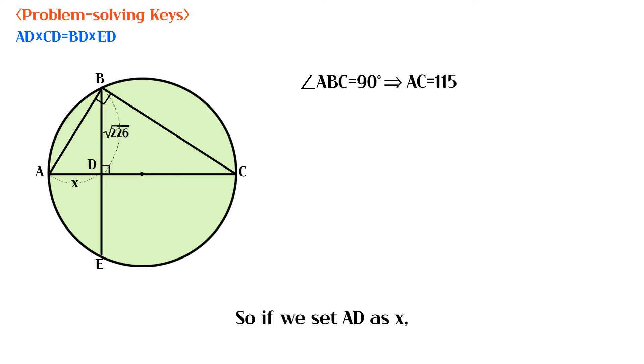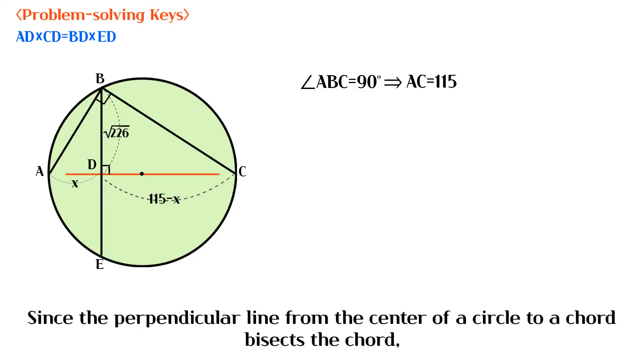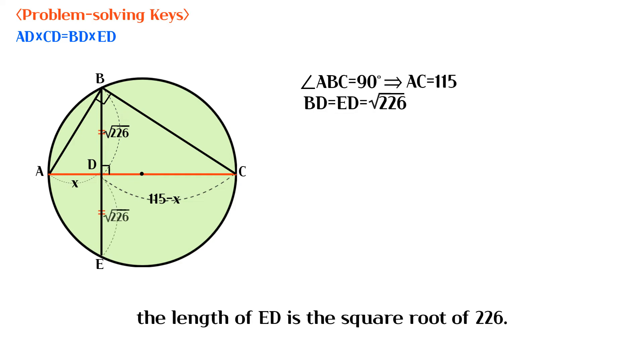So if we set AD as X, CD is equal to 115 minus X. Since the perpendicular line from the center of a circle to a chord bisects the chord, the length of ED is the square root of 226.